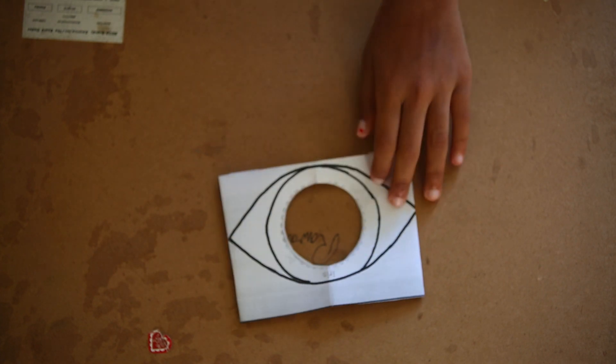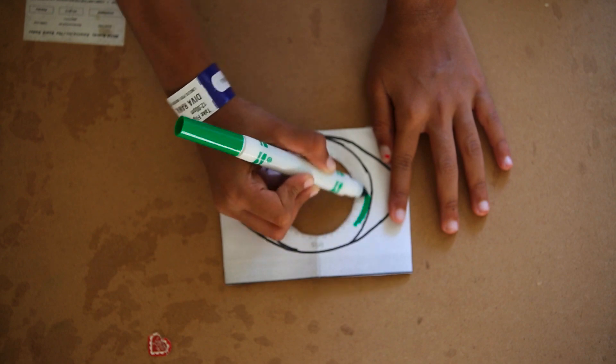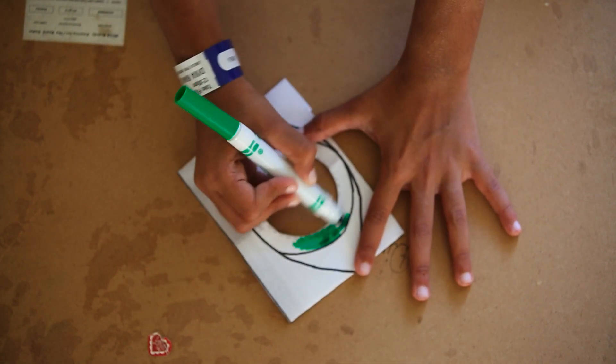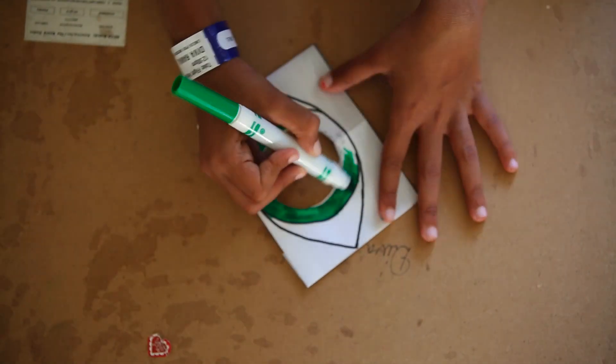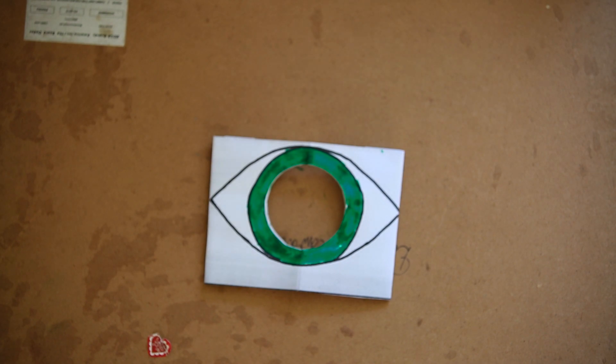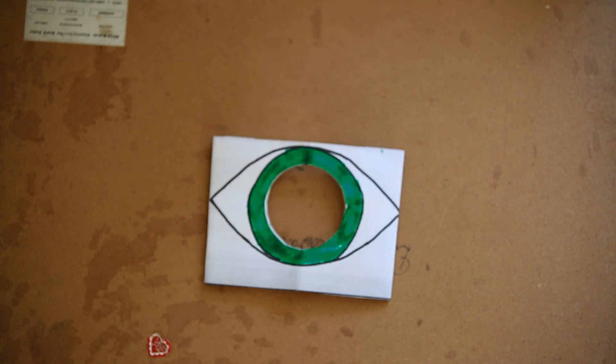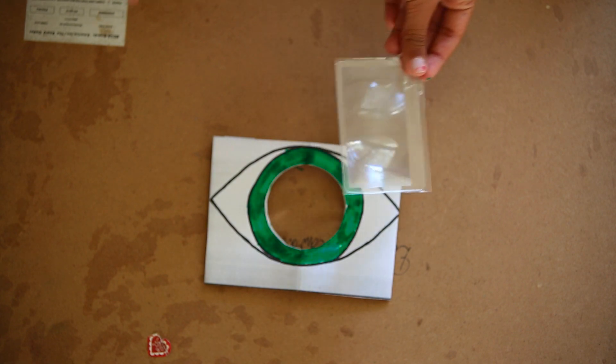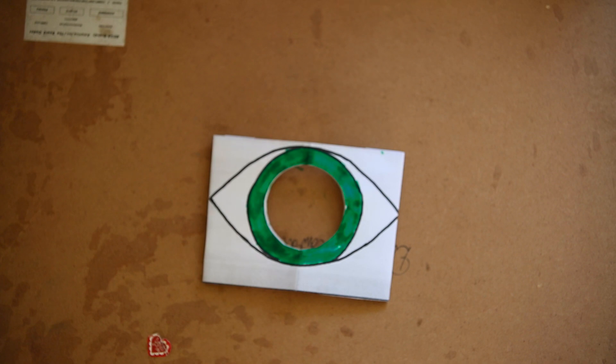And I'm going to color the iris so it looks real. I'm going to add the lens inside. You don't have to put it in some kind of paper, but since I made one, I'm going to put it in here.